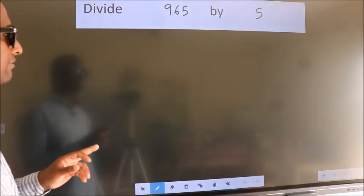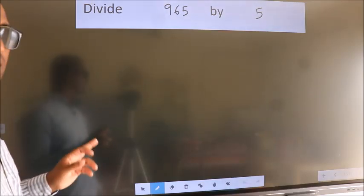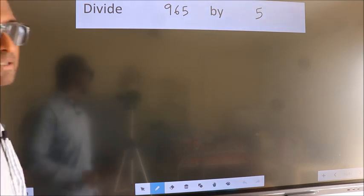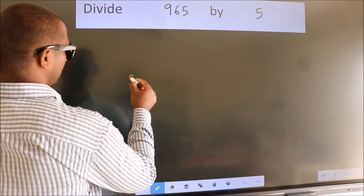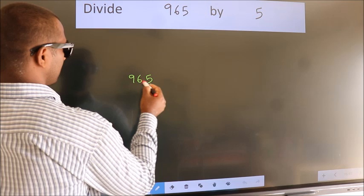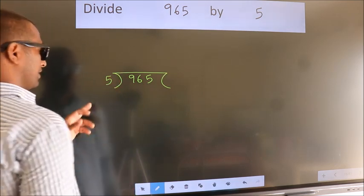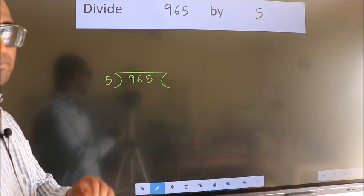Divide 965 by 5. To do this division, we should frame it in this way: 965 here, 5 here. This is your step 1.